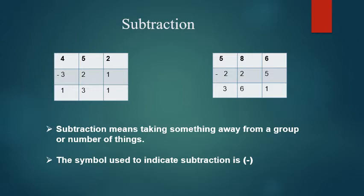Here 2 sums are already given. The first sum is 452 minus 321. Now you have to arrange these numbers according to each place — that is 100s place, 10s place and units place. Then we have to subtract units from units, 10s from 10s and 100s from 100s.